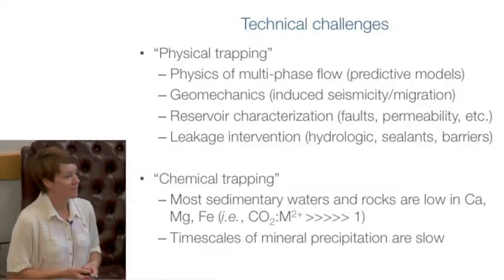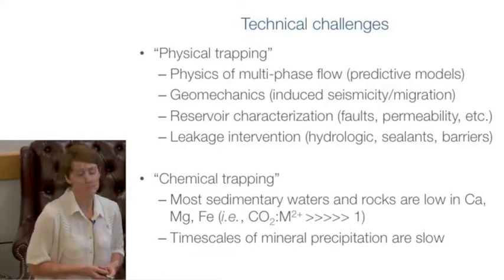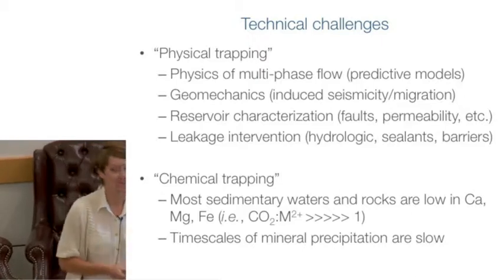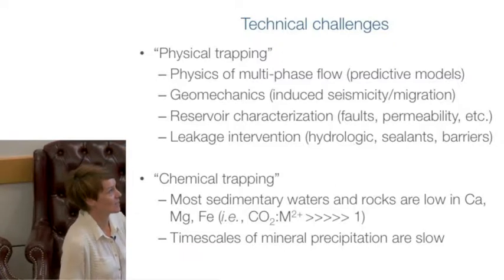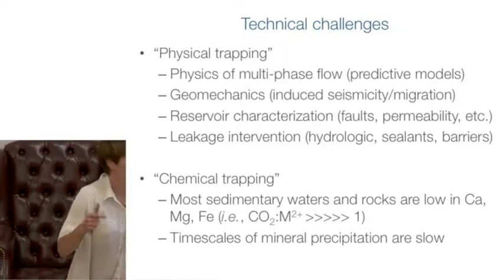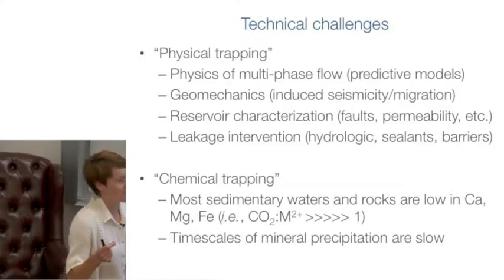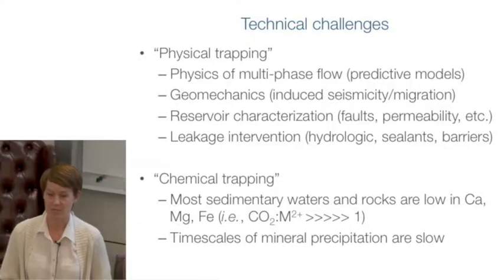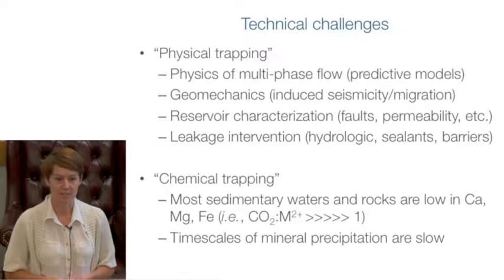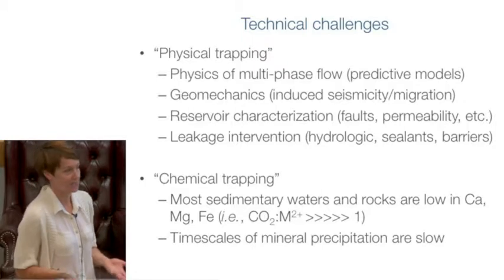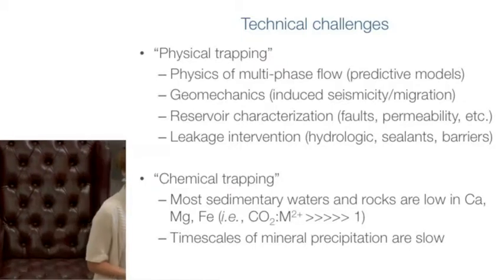The one area where we have the least expertise is what to do if the CO2 leaks. We know a lot about plugging wells, but we don't know how to plug something as diffuse as a fault. If we have a rupture along a large fault, how do we stop the CO2 from migrating upwards? Most of the problems there are in terms of material sealants resistant to CO2 — they need lower viscosity and long setting times. On the chemical trapping side, most rocks in sedimentary environments and most fluids don't have very much calcium, magnesium, or iron, so we can't turn the CO2 into carbonates because we don't have enough reactant, resulting in slow time scales of mineral precipitation.